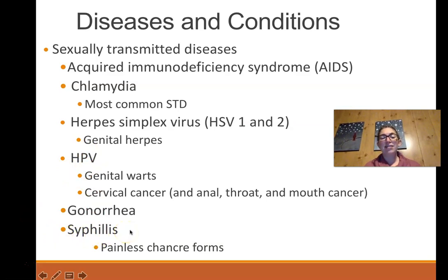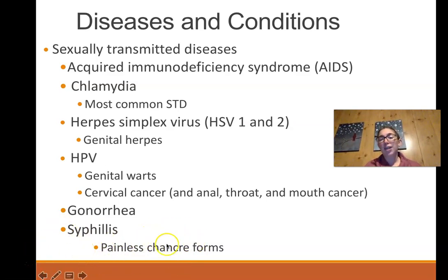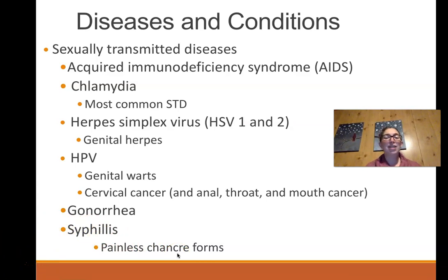Syphilis is an STI caused by a bacteria that can hide in the body and cause chronic disease. It is very treatable in the early stages with antibiotics, but if untreated, it can lead to systemic problems including neurological issues that cause a form of dementia. The early sign is a painless chancre — it looks like a blister on the genitals but is not painful. Because it doesn't hurt and eventually disappears, people sometimes ignore it and never get checked. If you ever see something like that, it is cause for concern and you should see a doctor, as it could be early and treatable syphilis.